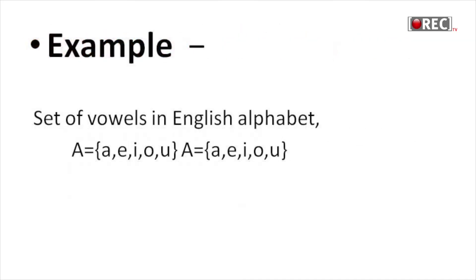For example, the set of vowels in the English alphabet: A, E, I, O, U. In roster form, we write A equals the set containing A, E, I, O, U, written with commas separating the elements.